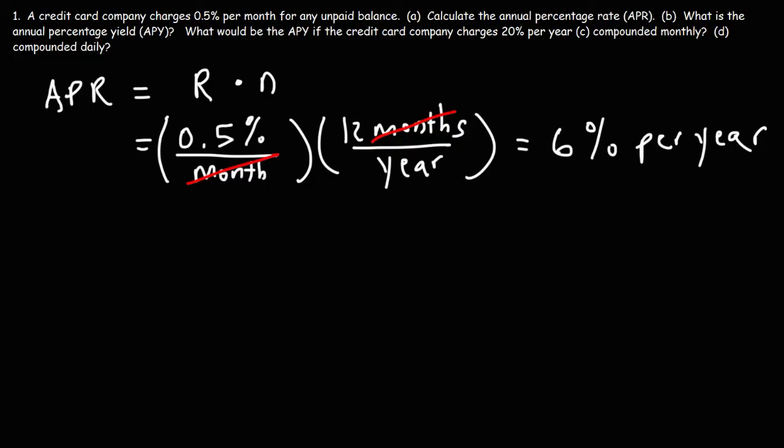Now, let's move on to part B. What is the annual percentage yield? To calculate the APY from the APR, you could use this formula. It's going to be 1 plus R. R is the interest rate, the annual interest rate, which is the annual percentage rate, or the APR. N is the number of times the interest is credited per year, which in this example is 12, and then minus 1.